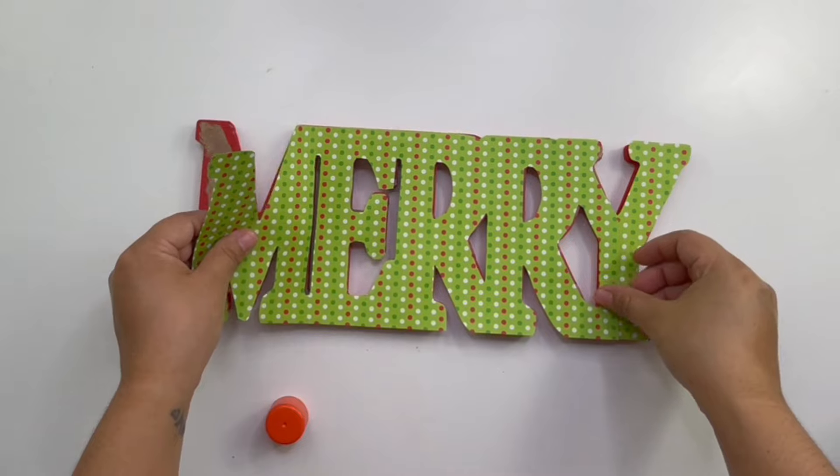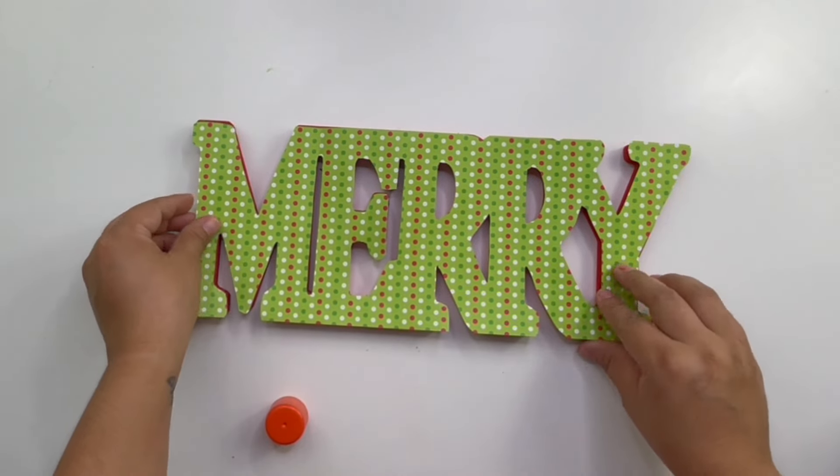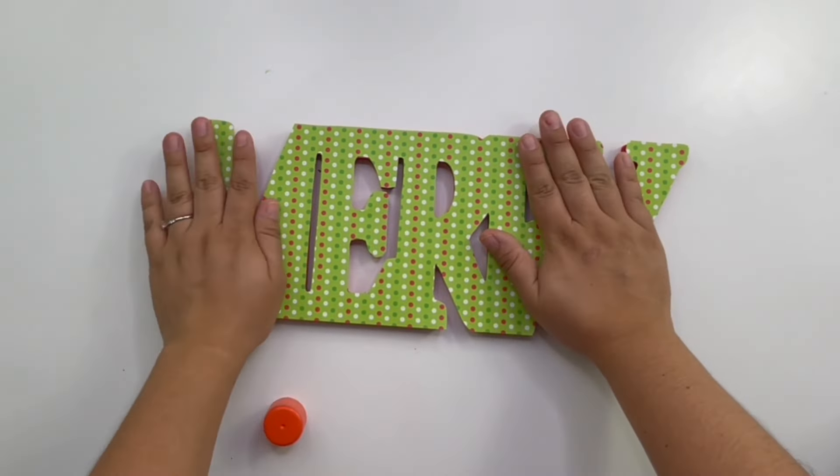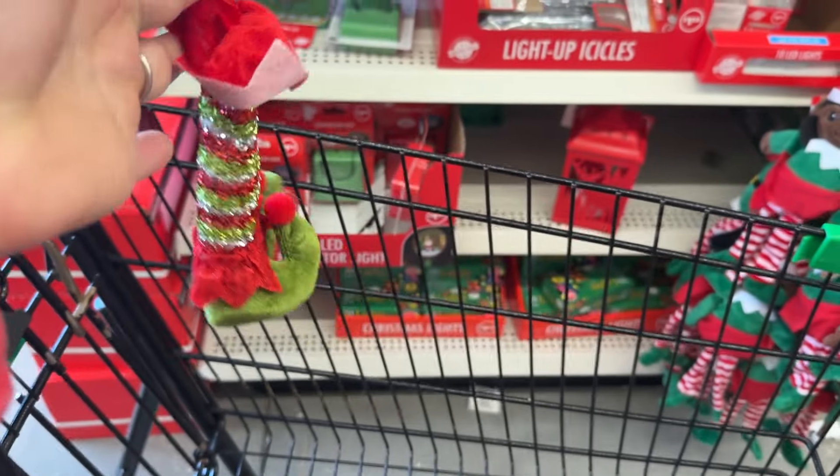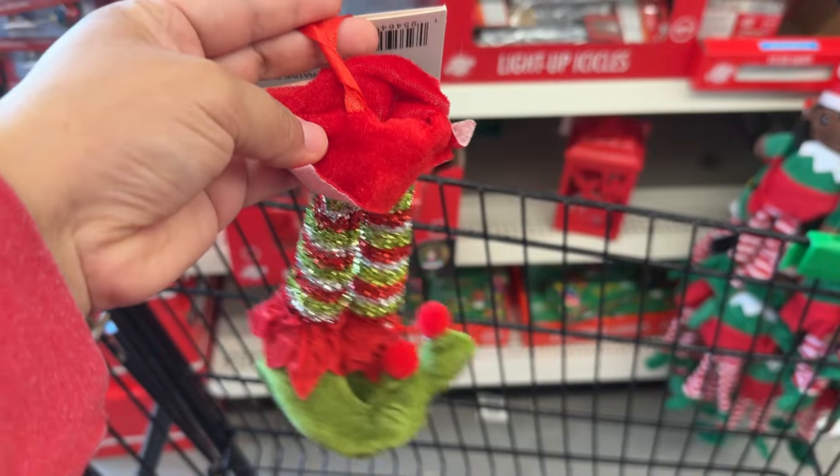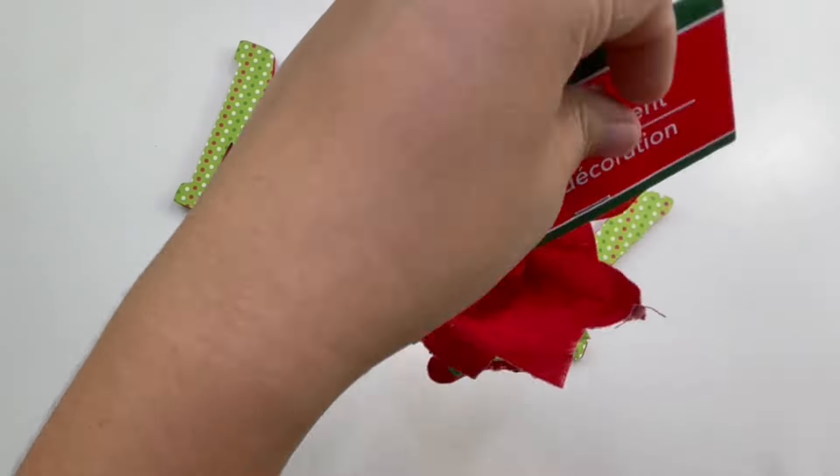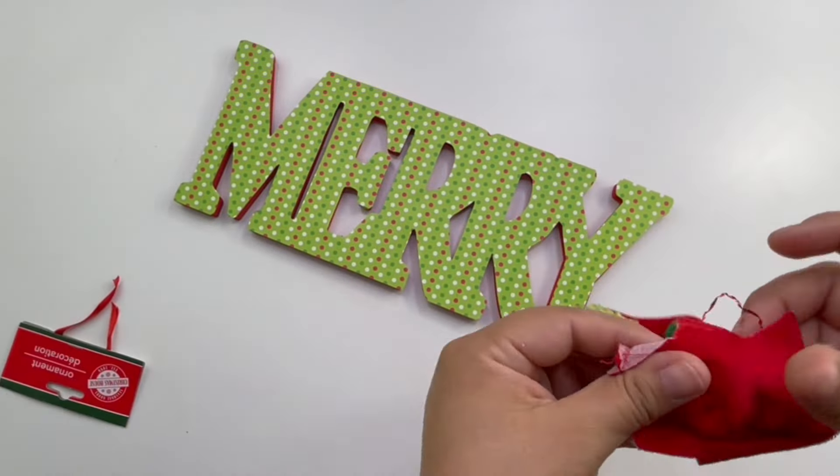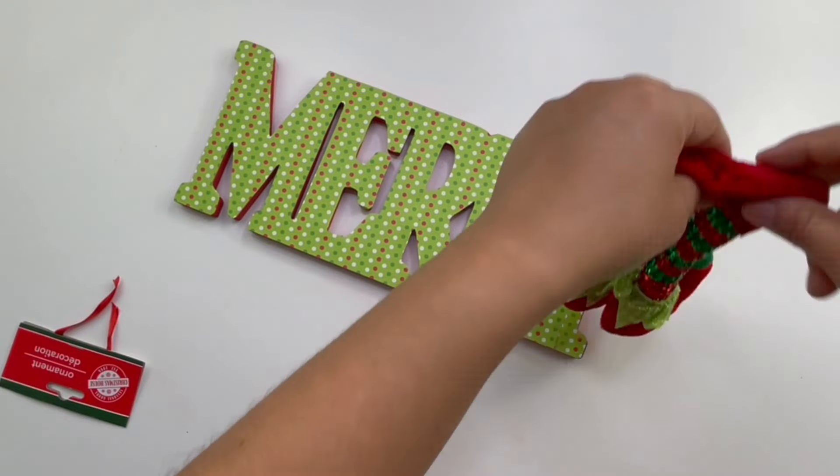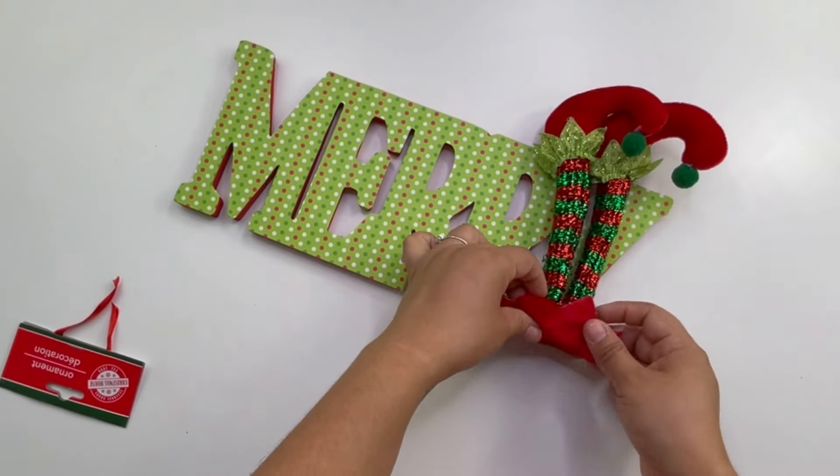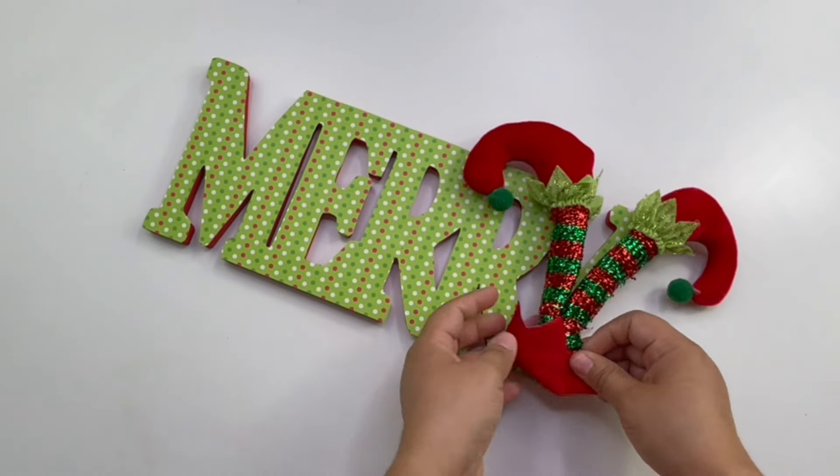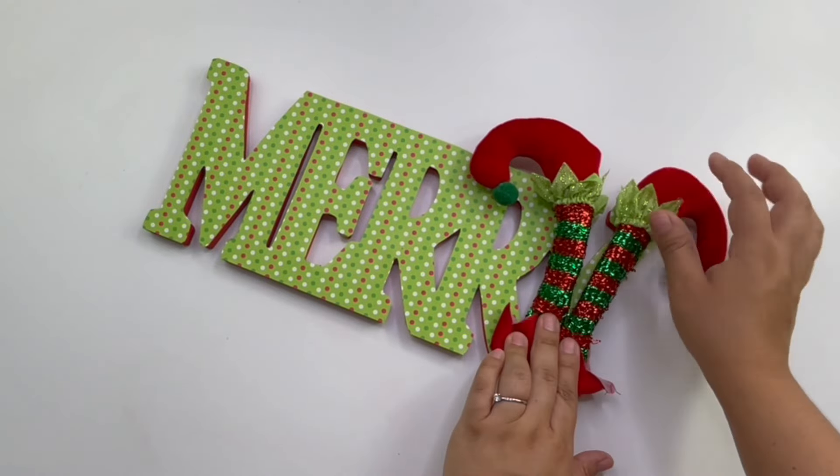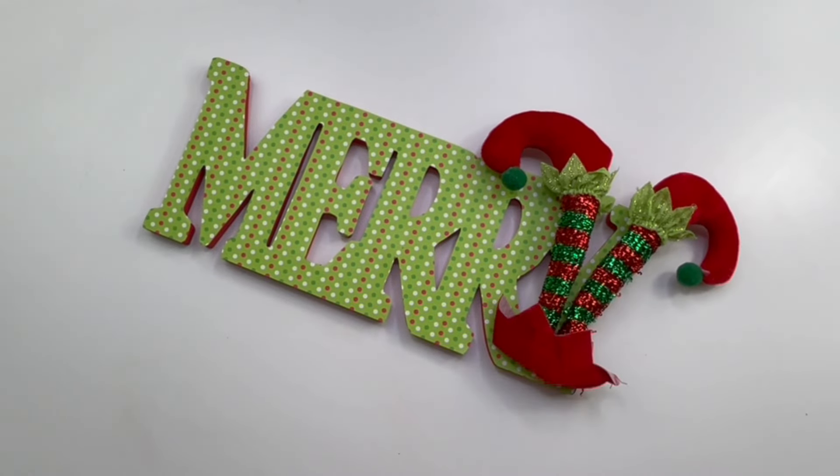This already looks perfect once I added the scrapbooking paper but I felt like it needed something now. So I picked up one of these little ornaments from the Dollar Tree. They carry two different colors, this one right here and this one right here which is darker. I grabbed the darkest one. All I'm gonna do is just glue it on the Y. And that is it. Look how cute this sign turned out.